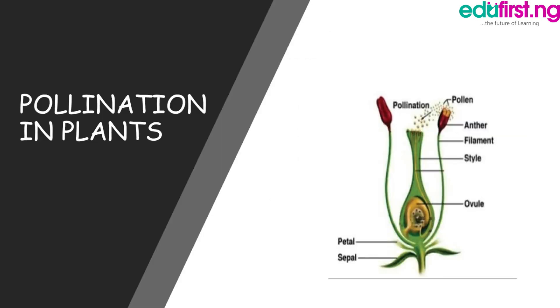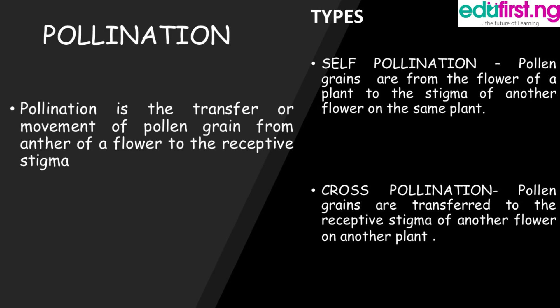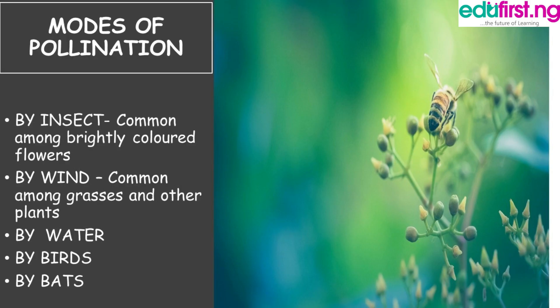Finally, we're going to consider pollination. What is pollination? Pollination is the transfer or movement of pollen grains from the anther of a flower. Self-pollination has to do with the receptive stigma of another flower on the same plant, while cross-pollination has to do with pollen grains being transferred to the receptive stigma of another flower on another plant. Methods of pollination include by insects, by wind, and so on and so forth.